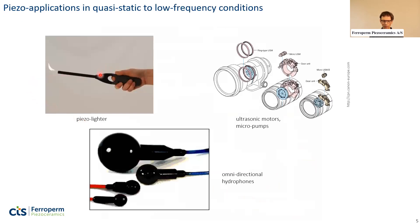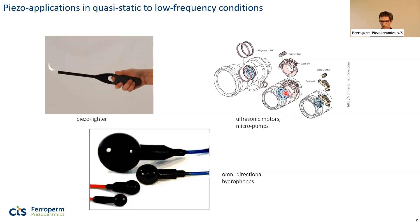The first simple application is the piezo lighter, where you generate a spark to ignite gas — operating at a rather low frequency. Another example is hydrophones, which are omnidirectional and therefore spherical in shape. Also in the low-frequency range there are examples of ultrasonic motors, like the small motors inside a camera lens.